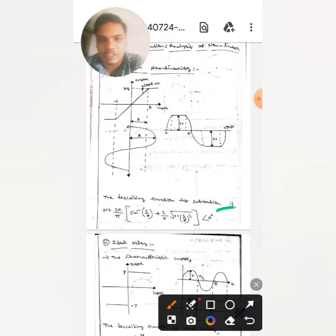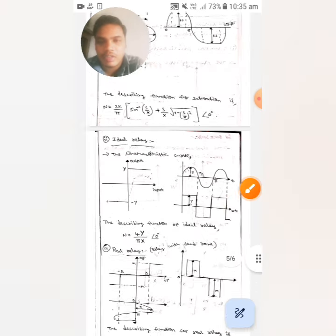The describing function for saturation is n equals 2k by pi into sine inverse of s by x plus s by x into root over 1 minus s by x whole square with phase angle zero degrees.